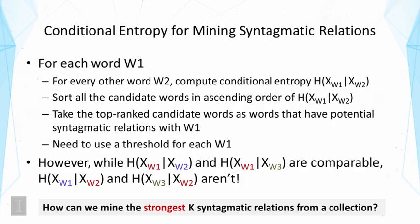This suggests we can use conditional entropy for mining syntagmatic relations. The algorithm works as follows: for each word W1, we enumerate over all other words W2 and compute the conditional entropy of W1 given W2. We sort all candidate words in ascending order of conditional entropy, because we want to favor a word that has a small entropy — meaning it helps predict the target word W1. We then take the top-ranked candidates as words with potential syntagmatic relations with W1, using a threshold based on the number of top candidates or an absolute value for the conditional entropy.